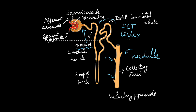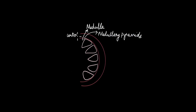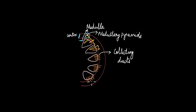Let's look at how nephrons are oriented within the kidneys. The cortex is the outer region, the inner portion is the medulla, and within it are the medullary pyramids. The nephron begins in the cortex with the glomerulus and proximal convoluted tubule. The loop of Henle descends into the medulla and returns, becoming the distal convoluted tubule, which feeds into the collecting duct. Each collecting duct receives filtrate from many nephrons and extends between the cortex and medulla. This is why the medullary pyramids appear striped — due to the presence of these collecting ducts.